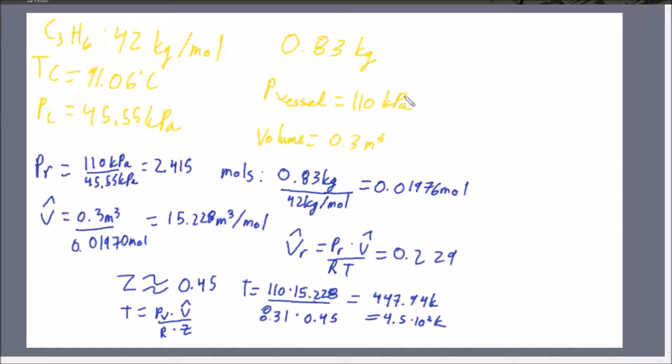With all of this, pressure reduced - we got Pc and P vessel. The equation for pressure reduced is simply the pressure of the vessel divided by the critical pressure of the compound, propene. That gives you a pressure reduced of 2.415.